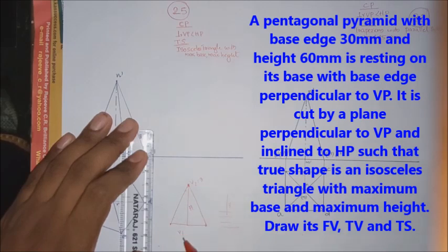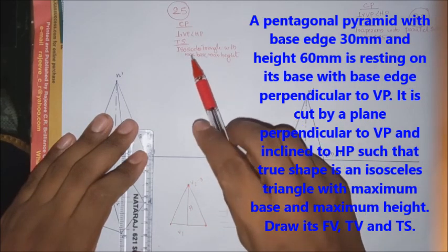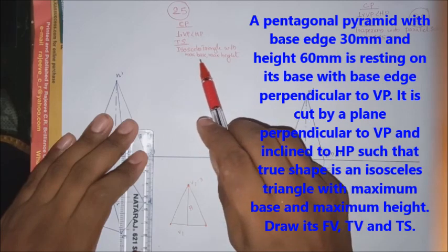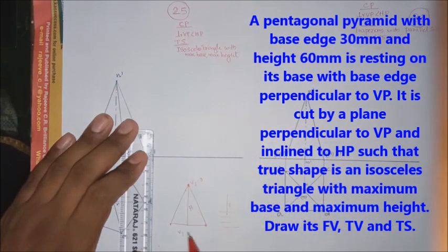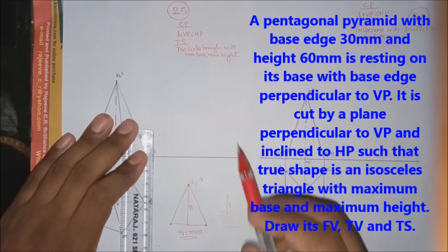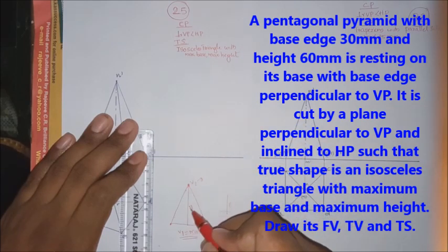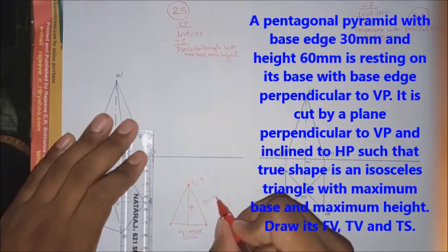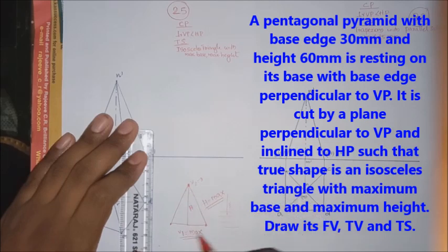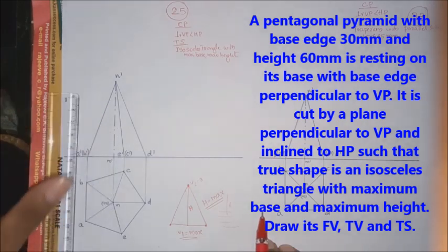Isosceles triangle with maximum base. That means, we have to rough the isosceles triangle. So, base is maximum. That means, V1 is maximum. So, V1 is maximum. What is maximum? That means, maximum height. That means, what is height? If we call h, we call h equal to maximum. So, maximum h and maximum V1.